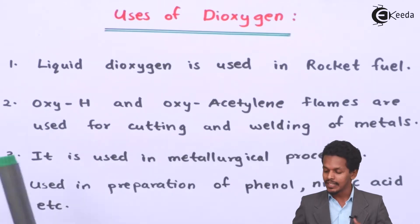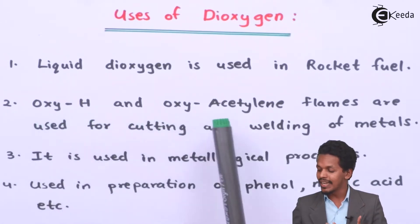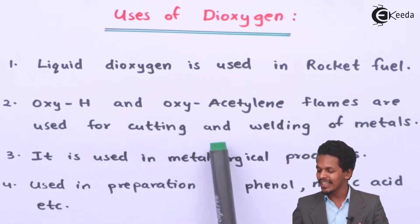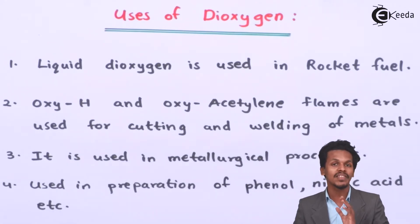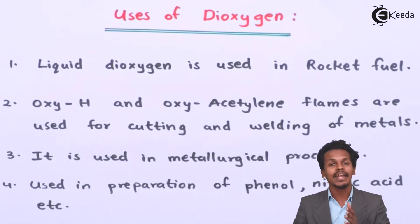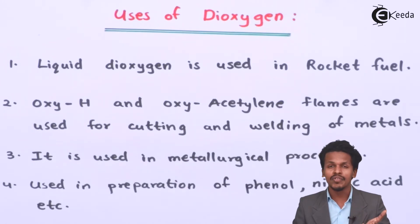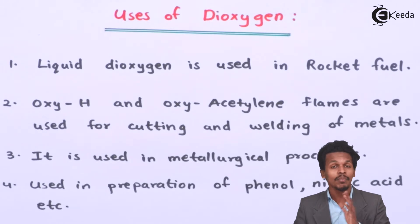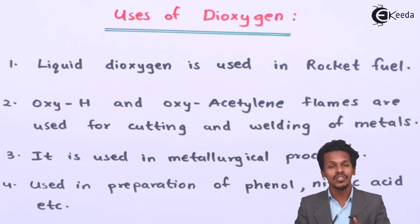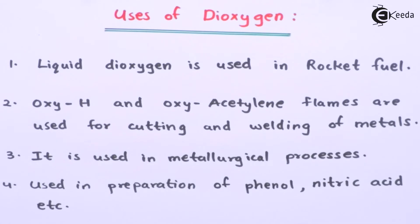Talking about the next one, the oxyhydrogen and oxyacetylene flames are used for cutting and welding of metals, where basically oxygen is supplied so that it could create a tremendous amount of temperature ranging from 2200 degrees Celsius to 3300 degrees Celsius. That much heat energy is released, because of which we can easily cut a particular metal.